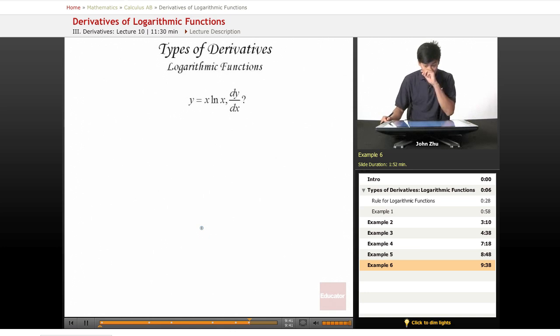One more example. Here we have two x terms multiplied together in different expressions. We know that most likely we'll have to take a product rule.